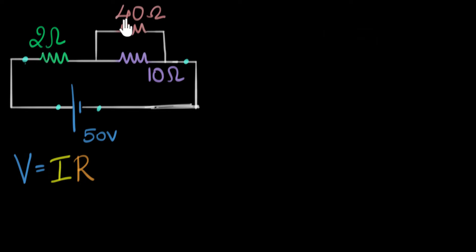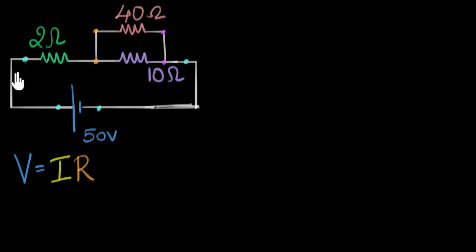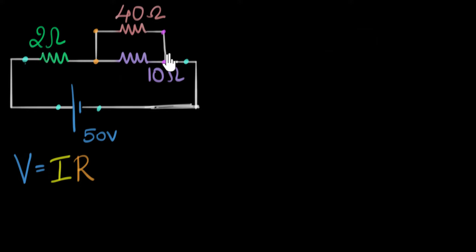But looking at the 40 ohm and 10 ohm resistors, they are in parallel. To check whether two resistors are in parallel, they need to have the same voltage across them. This point has the same voltage as this point because there are no resistors in between, and same for the other side. A wire always has the same voltage anywhere — assuming no resistance, the potential difference across any two points in a wire is zero. So the potential difference across both is the same, and therefore they are in parallel.